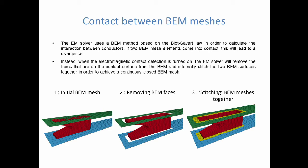When the electromagnetic contact detection feature is turned on, here is what happens. In the first step, the EM solver will loop over all the BEM faces and find out which ones are in contact. Then it will remove those faces from the BEM mesh — a little bit like the EM boundary keyword we saw in a previous video, except this is done automatically and internally by the EM solver. Then as a last step, it will stitch the BEM meshes together, creating a skirt mesh, which will result in one continuous closed BEM mesh.